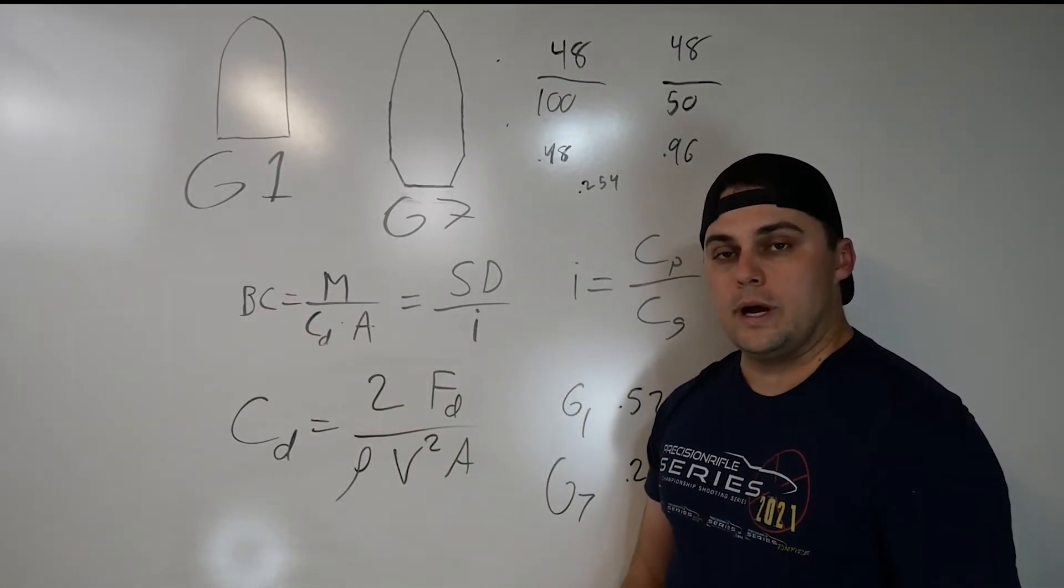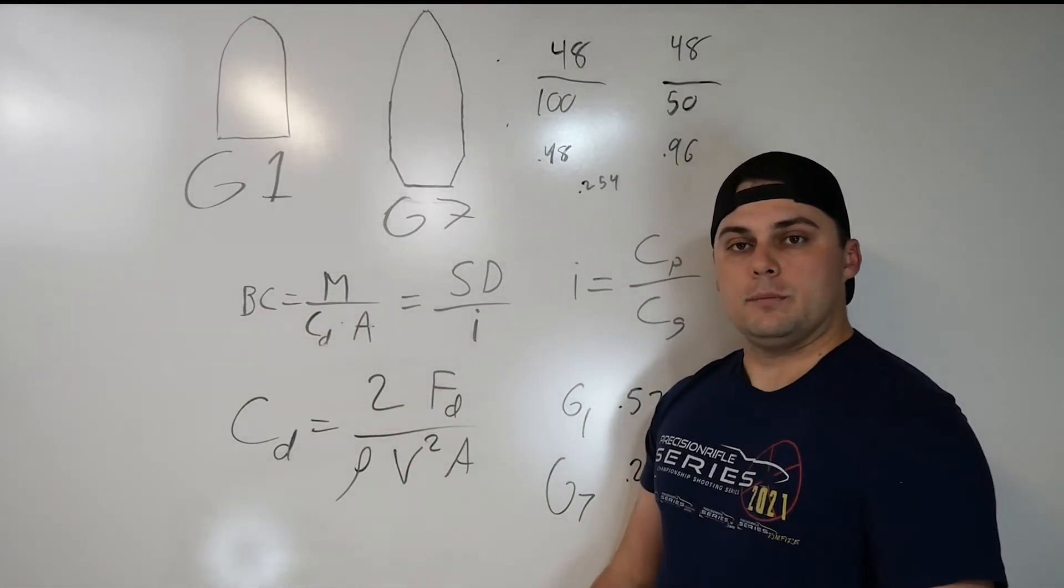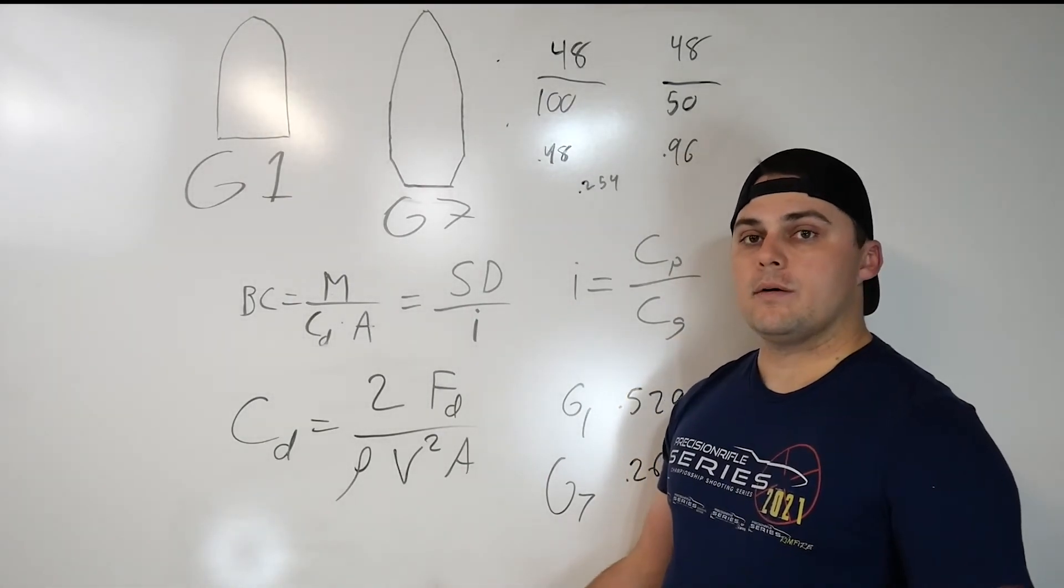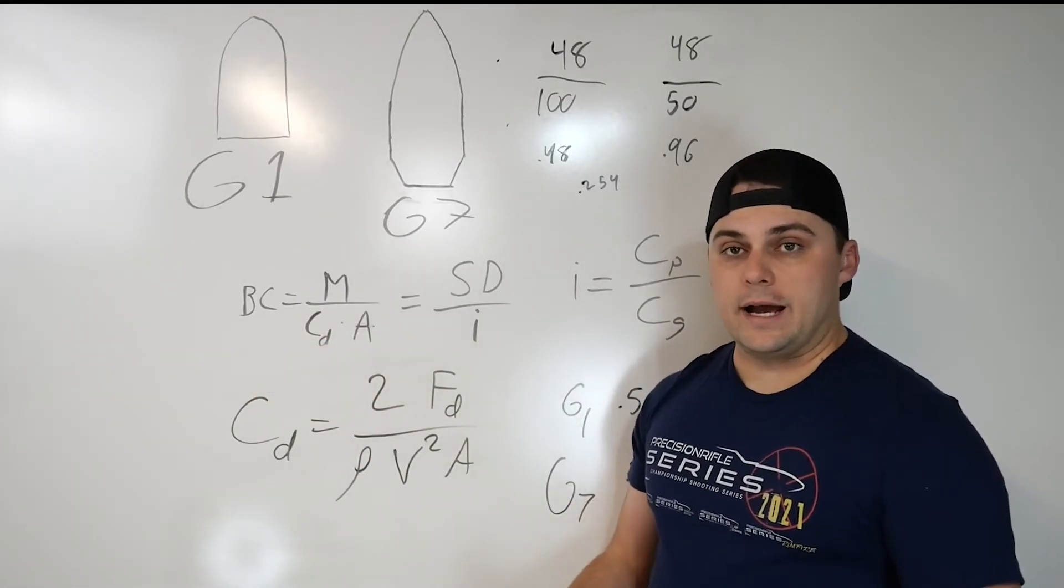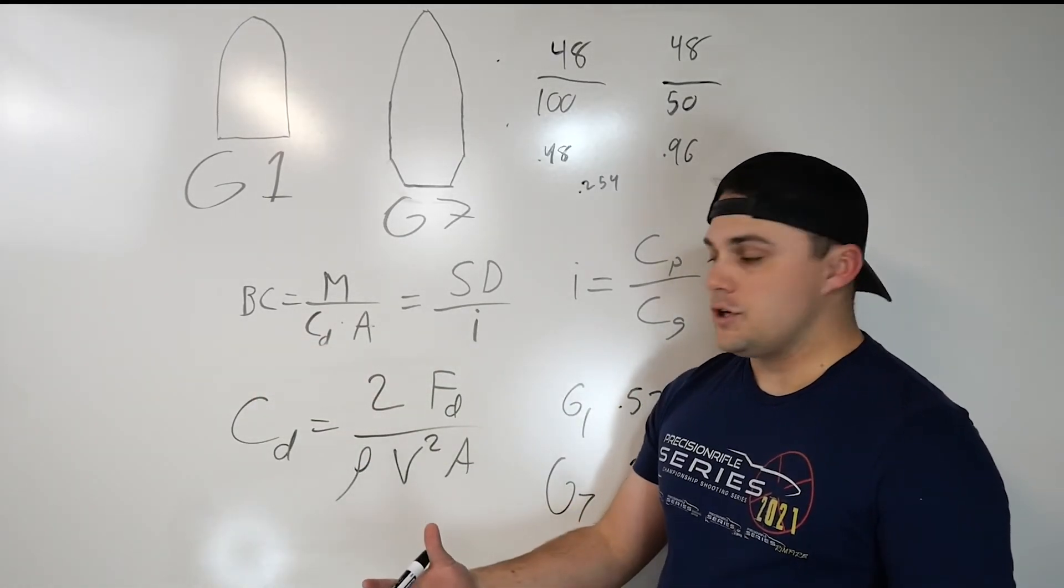So this is where it comes into a comparison. If you're choosing bullets of the same caliber around the same weight range, you can compare the ballistic coefficients to see which one of those has less drag and is going to maintain its energy better downrange.